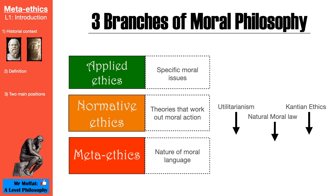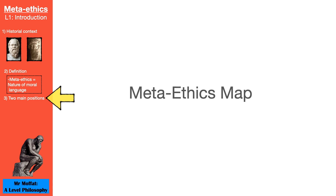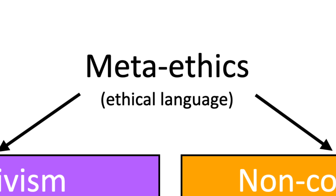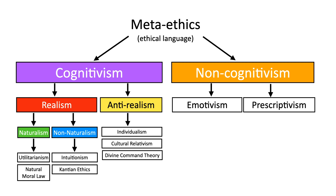As we will see, we can map all normative ethical theories — utilitarianism, natural moral law, Kantian ethics — somewhere in metaethics. In fact, we're going to explore this whole unit in the form of a map. It makes it more visual and helps us remember what would otherwise be a lot of different ideas and positions.